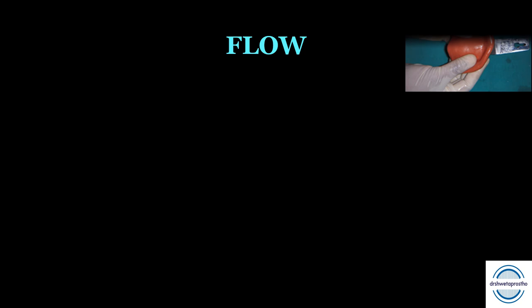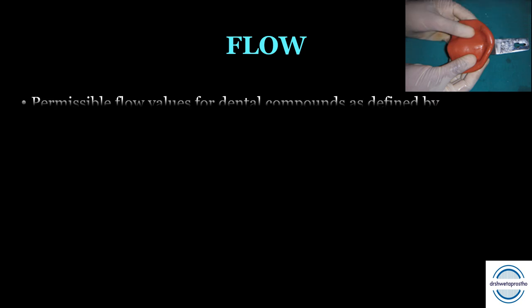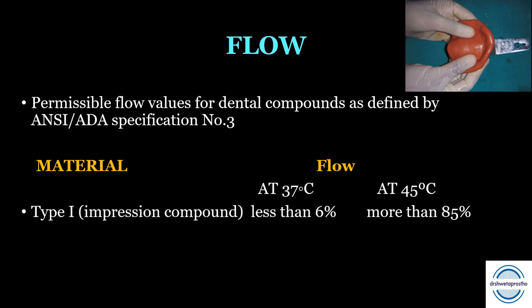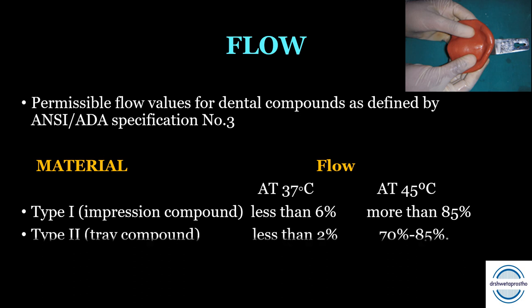Flow of impression material is very important to obtain details of tissue contour. According to ADA Specification No. 3: for Type 1 impression compound at 37°C, flow should be less than 6%; at 45°C it should be more than 85%. For Type 2 tray compound at 37°C, flow is less than 2%; at 45°C it is 70–85%. Due to less flow and high viscosity, pressure must be applied during impression making, making it a mucocompressive material.